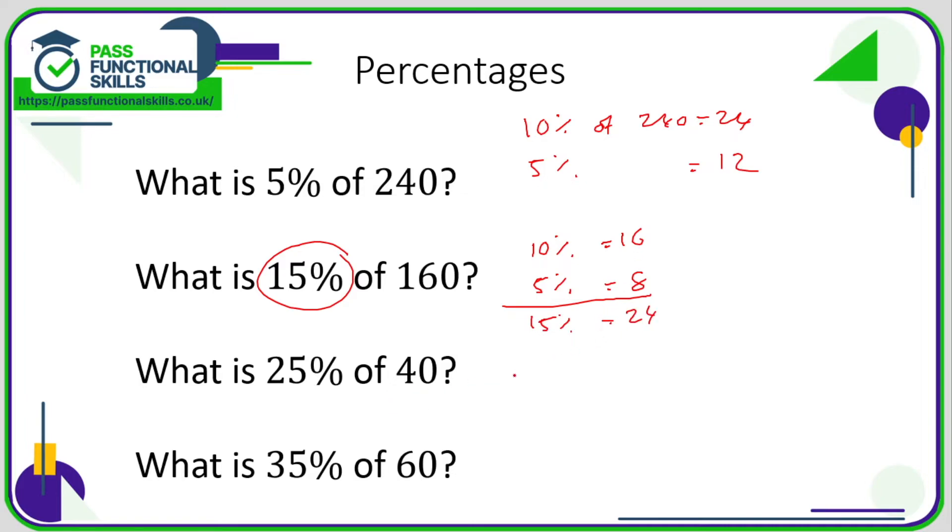For 25%, again that is 10%, 10%, and 5%, or you might just want to see it as 20% and 5%. Now 10% is 4, so 20% is 8, and if 10% is 4, then 5% is 2, so 25% is 8 plus 2, which is 10.